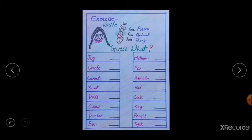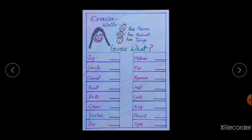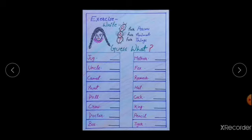Exercise time — guess what? There is a big list of names: jug, uncle, camel, aunt, doll, crow, doctor, bus, mother, fox, Ramesh, hat, cock, king, pencil, tiger. We have to write P for person, A for animal, and T for things. Be ready, take your pen.